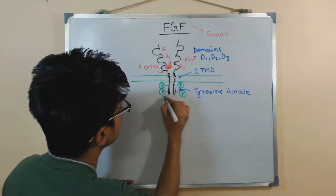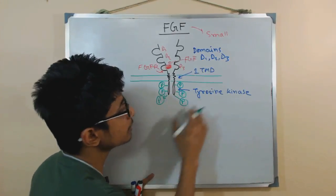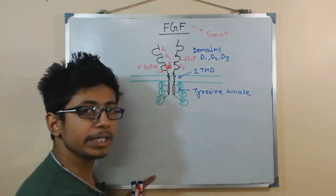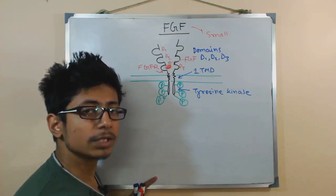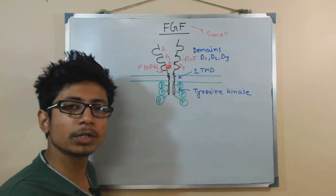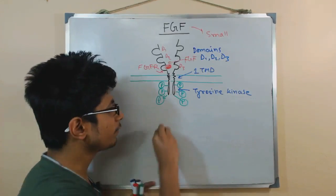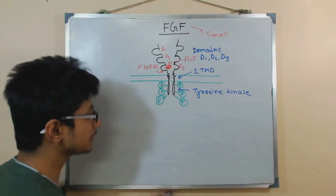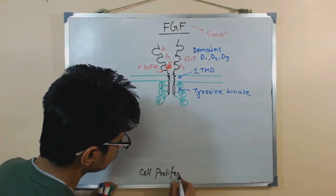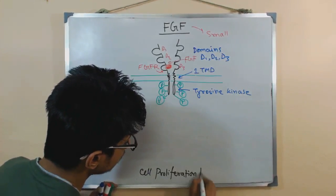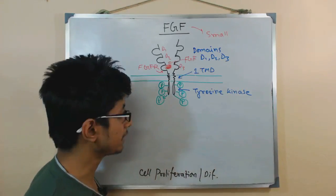Once the tyrosine kinase receptors are phosphorylated — approximately three phosphorylation events occur — they are ready to relay this signal downstream inside the cell. Other important signaling molecules and kinases get activated, and they finally lead to the signaling for cell proliferation and differentiation, which is the major task of fibroblast growth factor signaling.